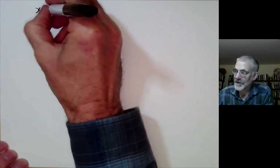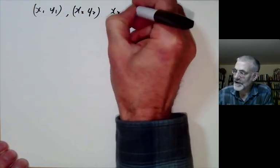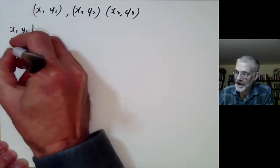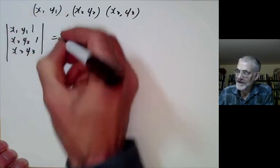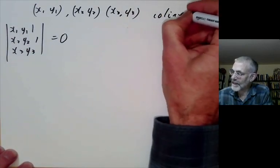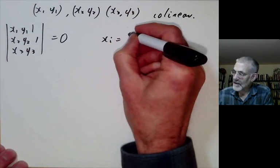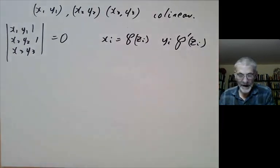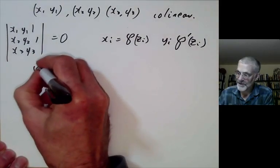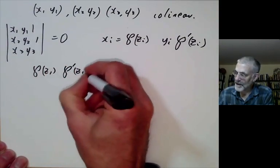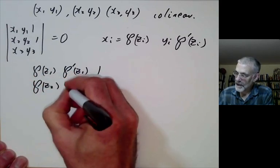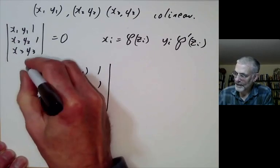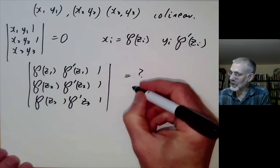Let's recall what it means for three points to be collinear. Three points (x1,y1), (x2,y2), (x3,y3) are collinear if the determinant of the matrix with rows (x1,y1,1), (x2,y2,1), (x3,y3,1) vanishes. We want xi = P(zi) and yi = P'(zi). So we should look at the determinant with rows (P(z1), P'(z1), 1), (P(z2), P'(z2), 1), (P(z3), P'(z3), 1), and determine what its zeros are.